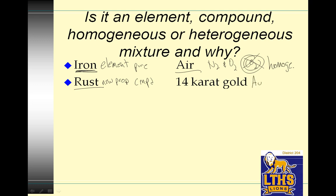14 karat gold. 14 karat gold is a mixture of gold, gold is Au, and zinc, zinc is Zn. Zinc is hard and strong. Gold is bright and shiny. And together they make an alloy. An alloy is a homogeneous mixture.